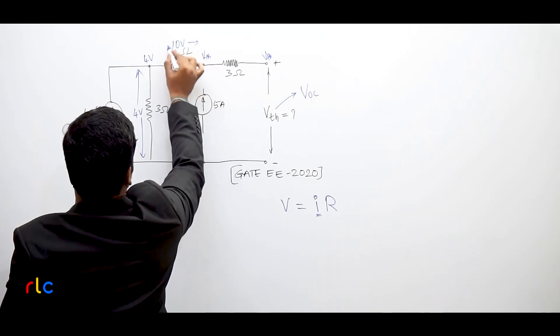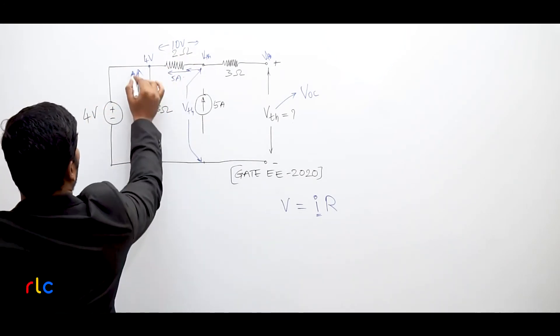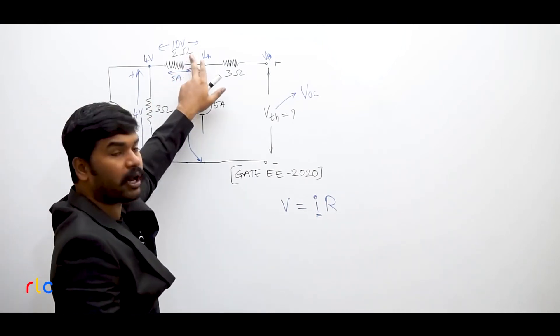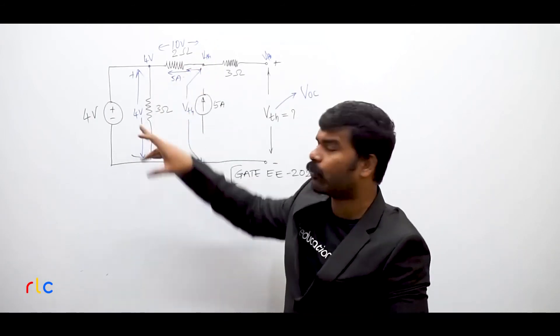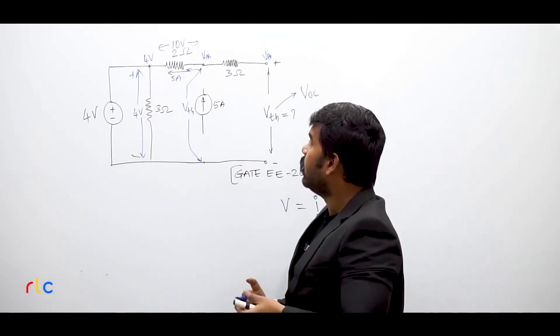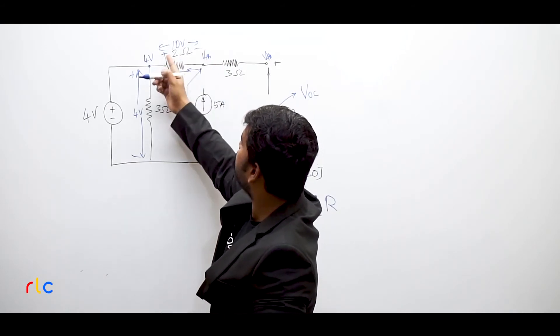10 volts is the voltage across the resistor. And here we are already having 4 volts, plus and minus. Now the question is about what is the polarity of 10 volts. Because I cannot directly tell that 10 volts plus 4 volts will become equal to 14 volts. But what if the polarity is like this: minus, plus, then minus, plus, plus, minus.